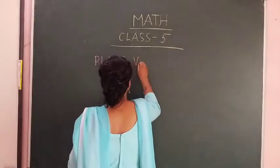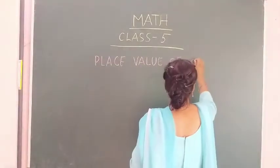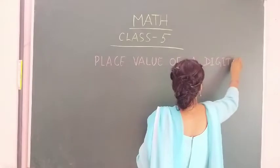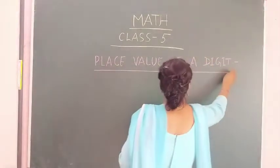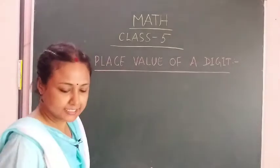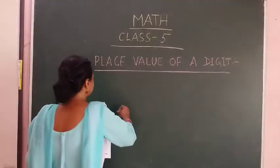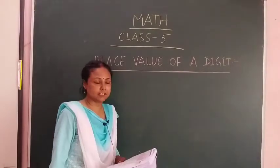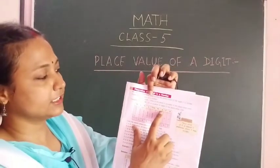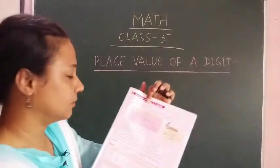The next topic is the place value of a digit in a number. We have already learned this using the Indian place value chart. This is the ones place, then tens, hundreds, thousands, ten thousands, lakhs, ten lakhs, crores, and ten crores.